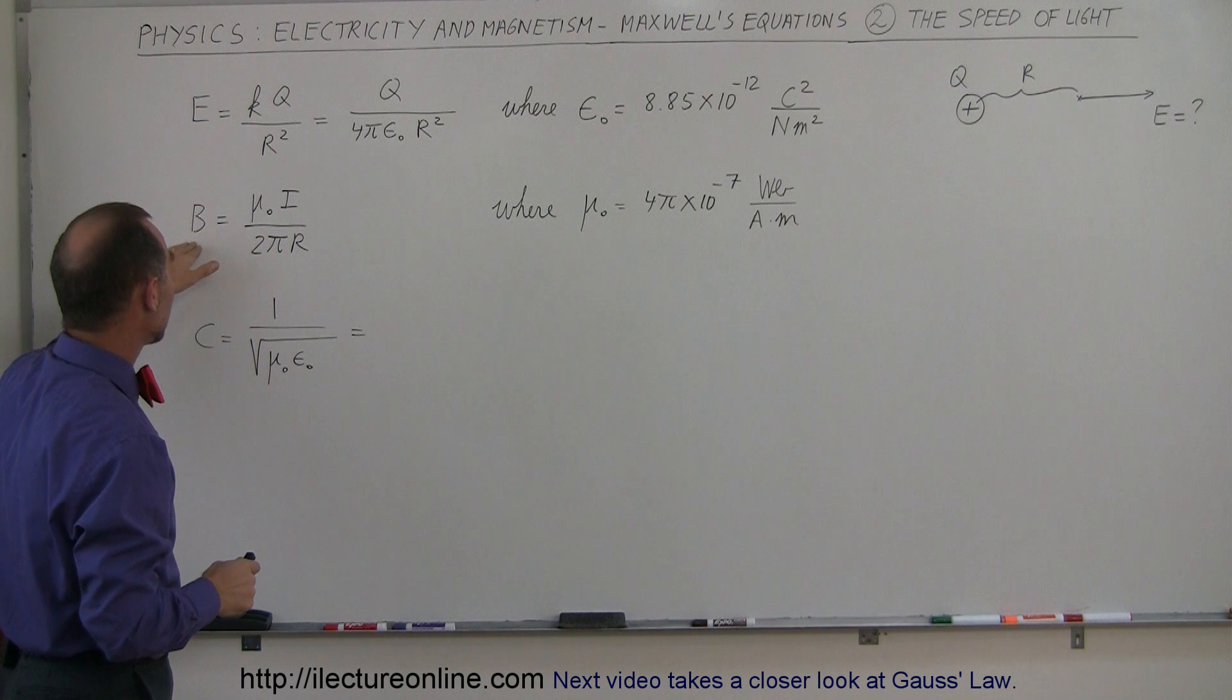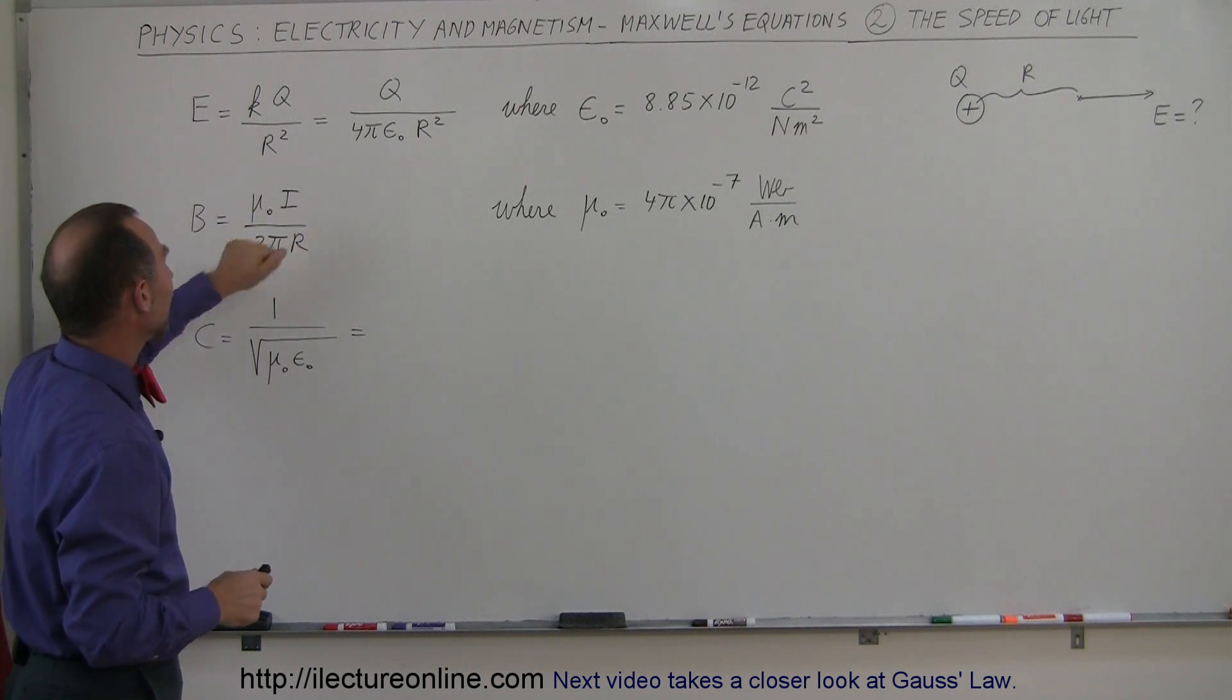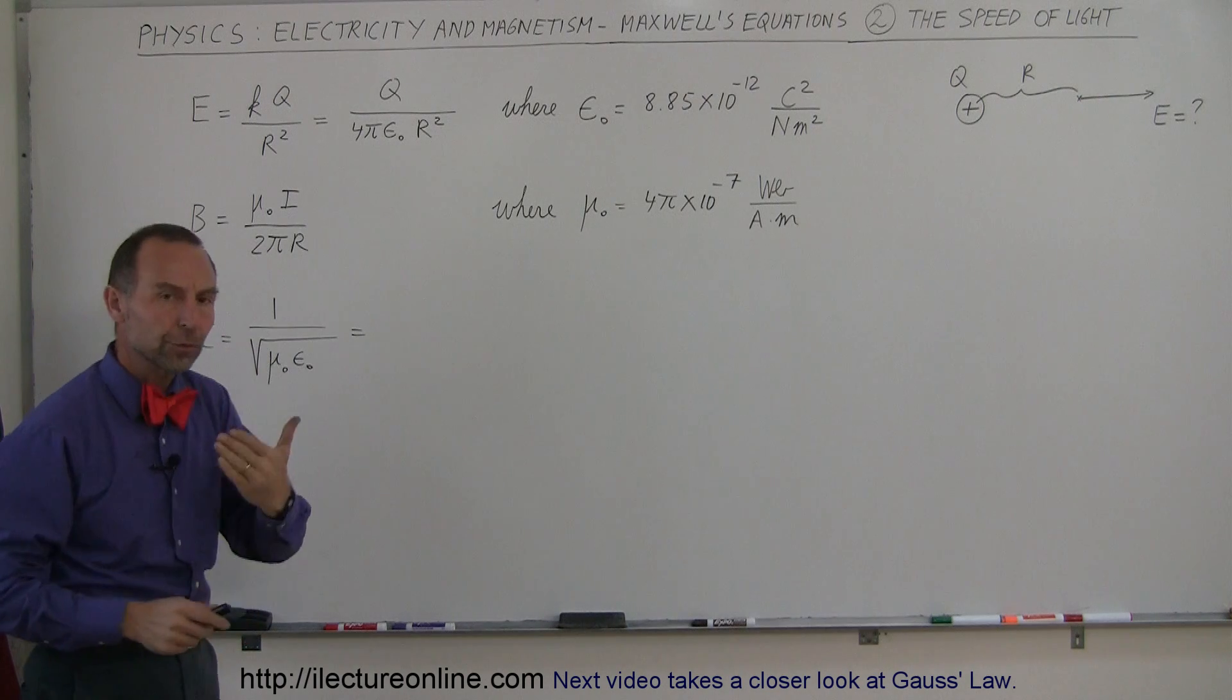Likewise, the magnetic field strength B is equal to mu sub nought times i divided by 2π r. Now i is the current in a wire.